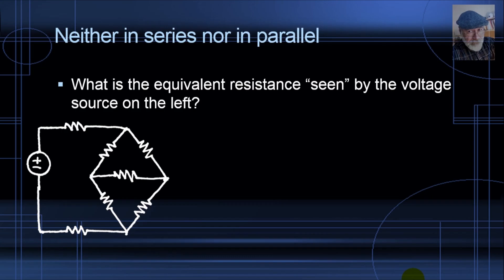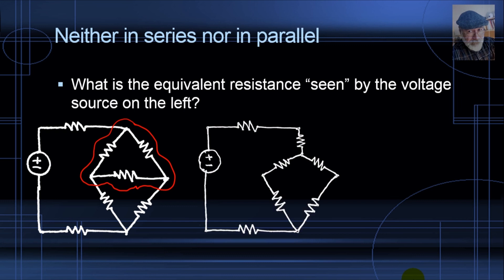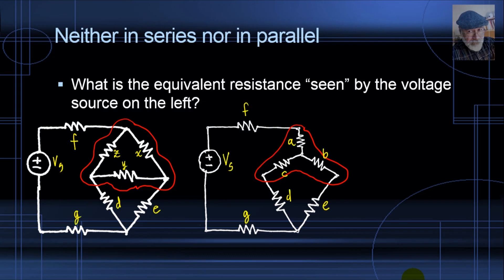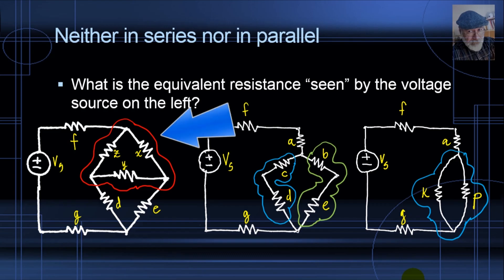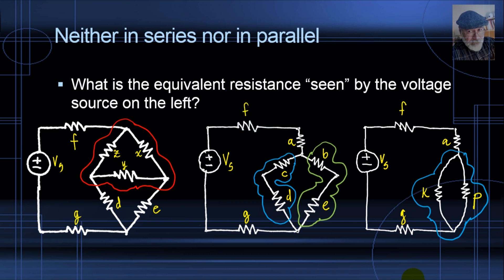I'll choose the triangle on top and replace it by an equivalent star. Now I can simplify: C and D are in series, B and E are in series, and I end up with a simpler circuit. K and P are now in parallel, and that is in series with the other three resistors. All it took was converting this triangle into this star to put us back on the track of simplifications. Sometimes it's the other way around — you have a star, and converting it to a triangle enables the simplifications.